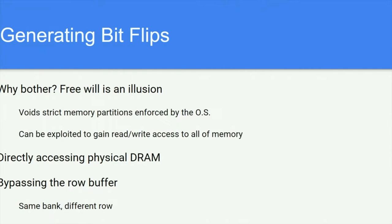As DRAM chips scale down and the distance between adjacent cells decreases, it becomes progressively more challenging to prevent DRAM cells from electrically interacting with one another. Jung et al. observed that repeatedly accessing specific rows — row hammering — of physical DRAM memory can cause charge to jump and result in random bitflips in adjacent rows.